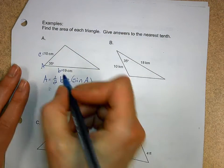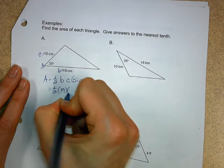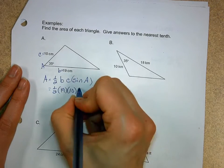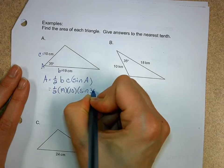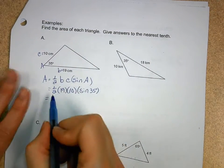You see how I enclose it? So we just go one half of 19, times 10, times the sine of 35 degrees. Now, I like simplifying before I punch it into the calculator,